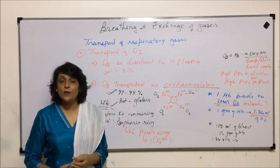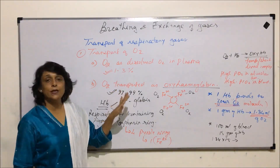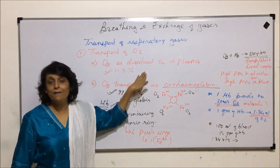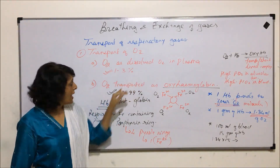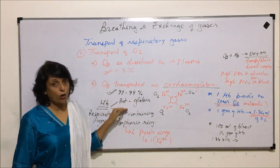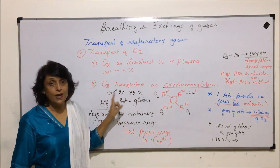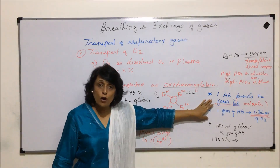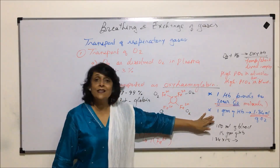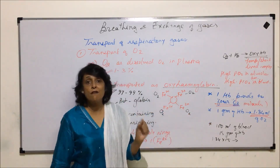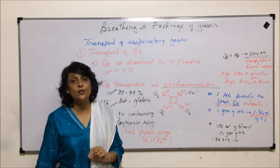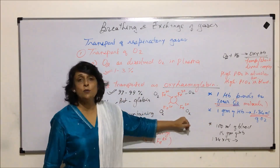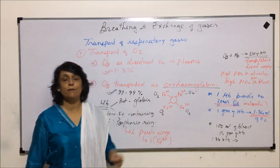So, out of the two respiratory gases — oxygen and carbon dioxide — this is how oxygen gets transported: very less as dissolved and maximum as oxyhemoglobin. One hemoglobin molecule carries four oxygen molecules and one gram of hemoglobin transports 1.34 milliliters of oxygen. In the next part, we will take up transport of carbon dioxide.